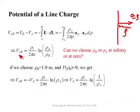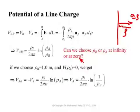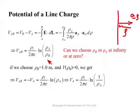We are now able to obtain the voltage difference between two points A and B; this is V_B minus V_A, given by this expression. Can we choose Rho_B or Rho_A to be infinity, as we did for a point charge? No, we can't do that. Because if you put infinity here, and try to make the point at infinity have zero voltage, this will give you an infinite potential difference.